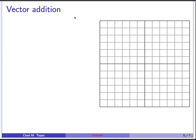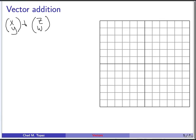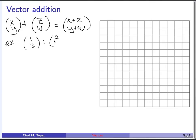Let's talk about vector addition. Algebraically, if you have two vectors (x, y) and (z, w) and you add them, you get a new vector where the first entry is x plus z and the second entry is y plus w. For example, (1, 3) plus (2, -1) gives you 1+2=3 on top and 3-1=2 on the bottom, so the result is (3, 2).